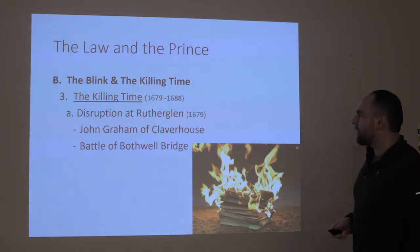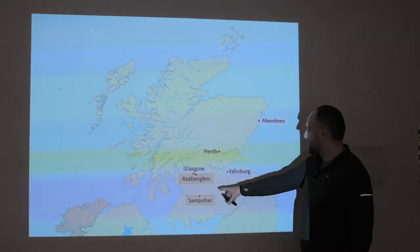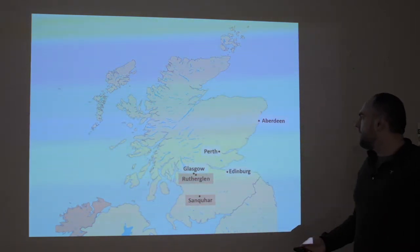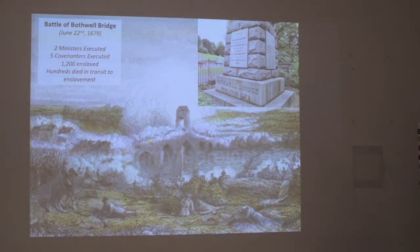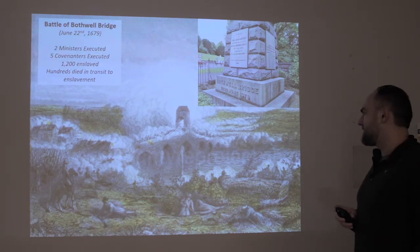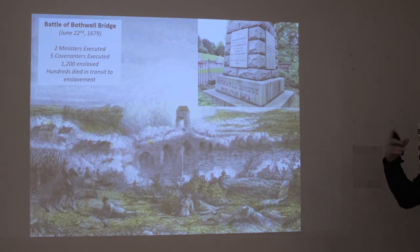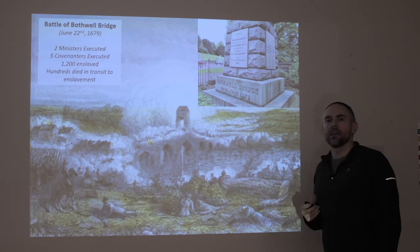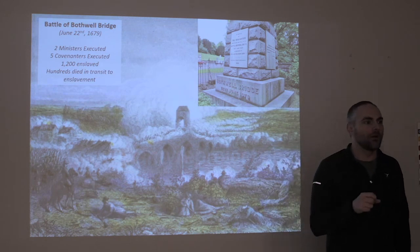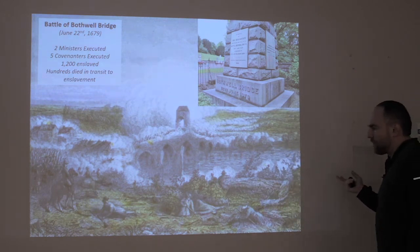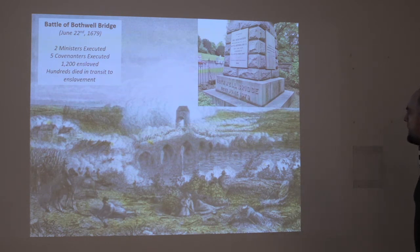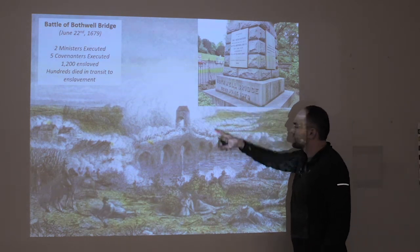This leads to the Battle of Bothwell Bridge nearby. Rutherglen is where this is happening generally; Bothwell Bridge is outside of Glasgow. At this battle, there are obviously many casualties of war, but at the end of it two ministers are executed, five Covenanters are executed, and 1,200 people are enslaved — literally sold into slavery. Remember, John Knox was a galley slave on a boat; that was something you would do when a war had occurred. There is a monument to Bothwell Bridge commemorating June 1679. This is just one conflict very near the beginning of the killing time.